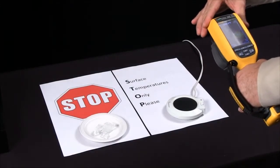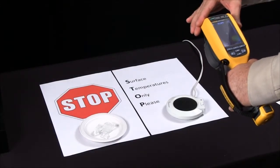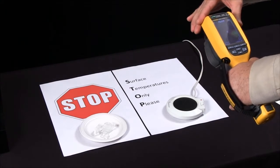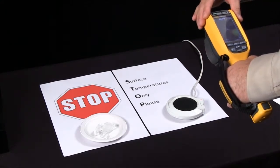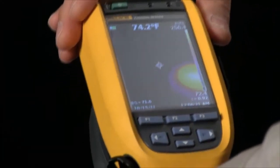A Fluke Thermal Imager is a very powerful device, but you still cannot see through anything. If you're trying to detect leaks in walls or anything inside an enclosure, you will only see the surface temperature.